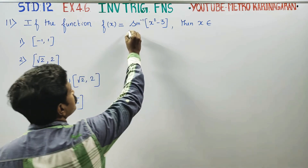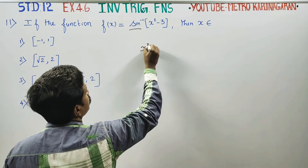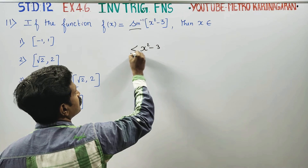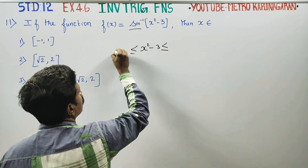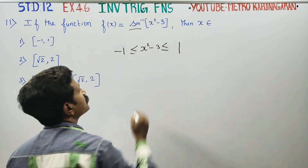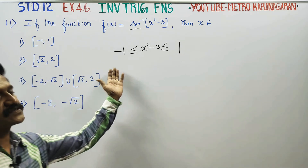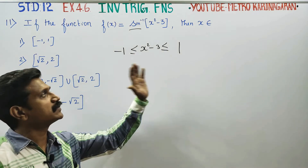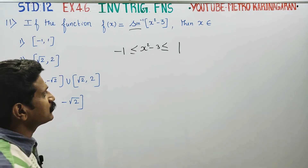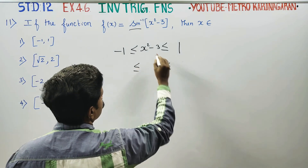For sine inverse, the range of the argument must be between minus 1 and plus 1. So the domain condition requires the expression inside sine inverse to satisfy: minus 1 is less than or equal to x squared minus 3, less than or equal to plus 1.